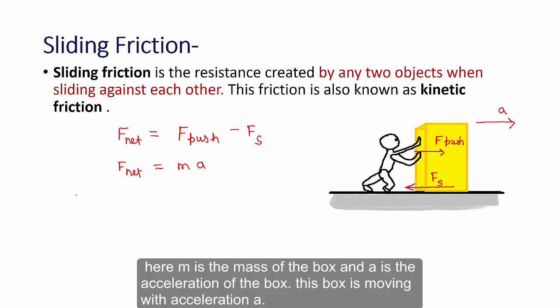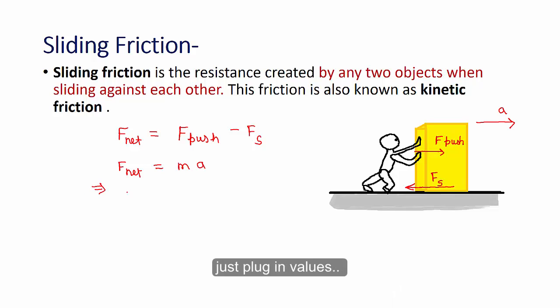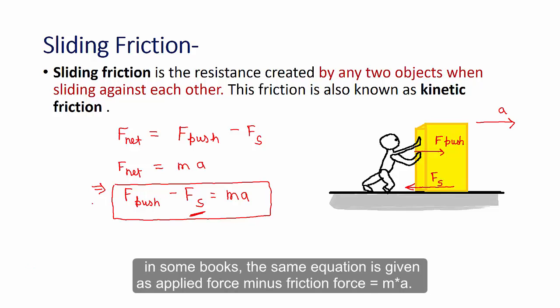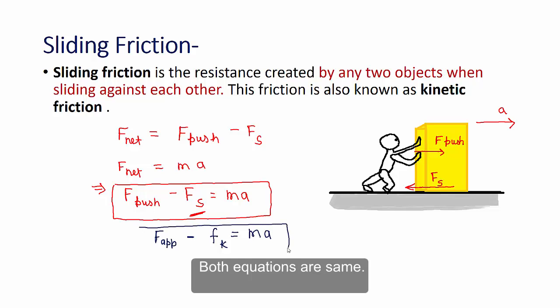This box is moving with acceleration A. So just plug in values. So we will get F net equals F push minus Fs equals M A. So this is the force equation. We can use this force equation to find sliding friction force. In some books the same equation is given as applied force minus friction force equals M times A. So both equations are same.